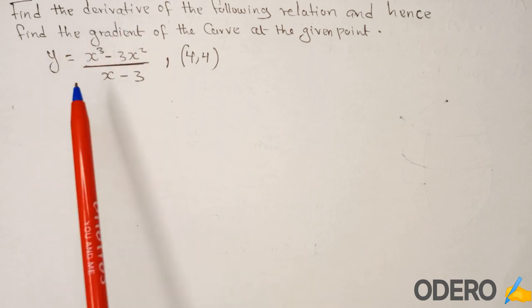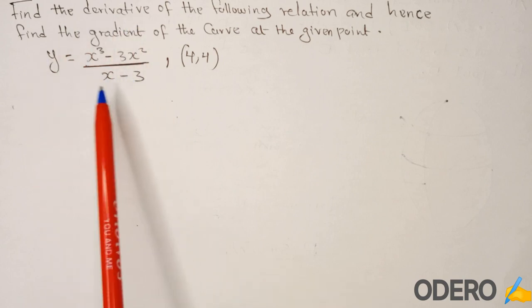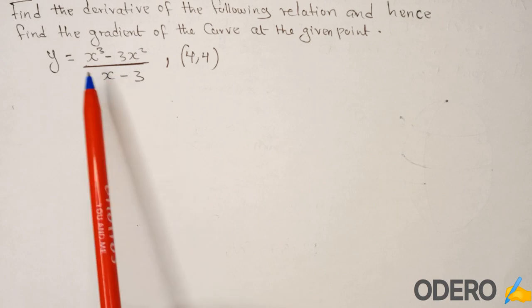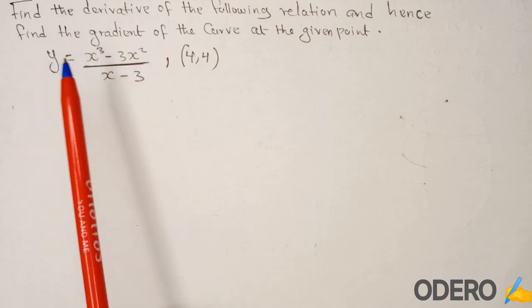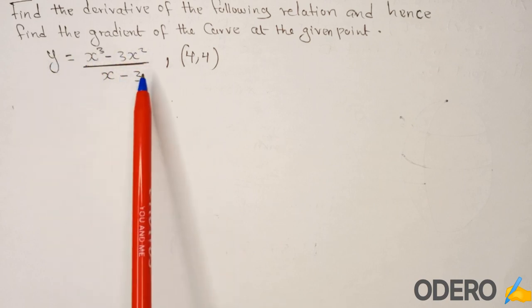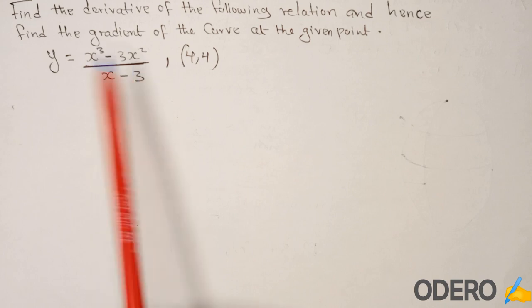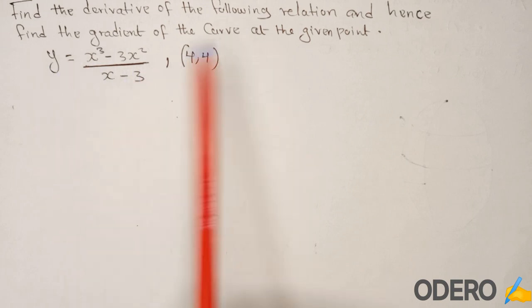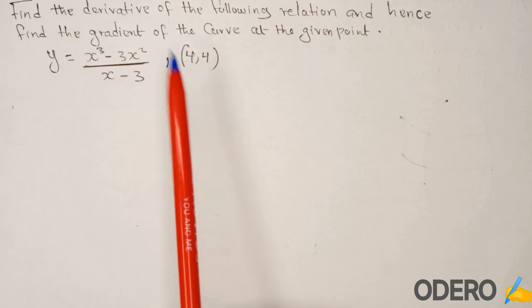So derivative means we find the gradient function, or we differentiate this function. When you differentiate this function, you get what is called the gradient function. That gradient function can help us to get the gradient of this curve at this specific point.